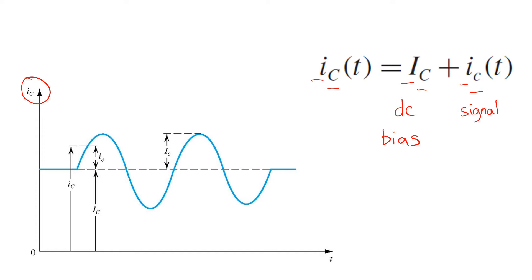These signal components are also identified on the plot. For example, at this point in time, the total value of the signal is lowercase i, uppercase c.